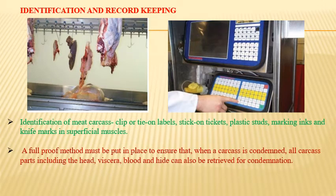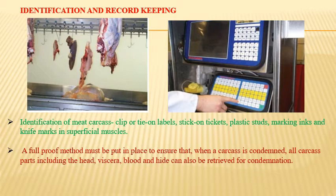Identification and record keeping is very important. There should be proper identification of meat carcasses — using clip or tie-on labels, stick-on tickets, plastic studs, or marking inks and knife marks in superficial muscles. A foolproof method must be in place to ensure that when a carcass is condemned, all parts including the head, viscera, blood, and hide can also be retrieved for condemnation. For severe contagious disease cases, there must be a proper system to dispose of every part of the carcass or animal.